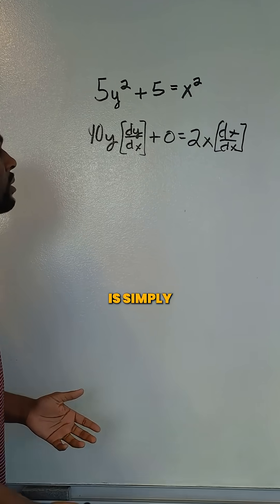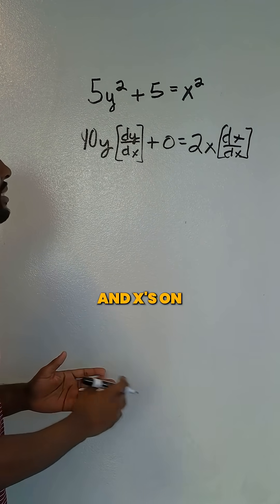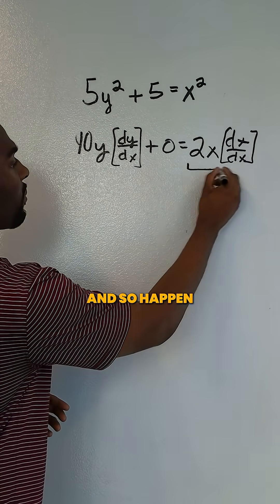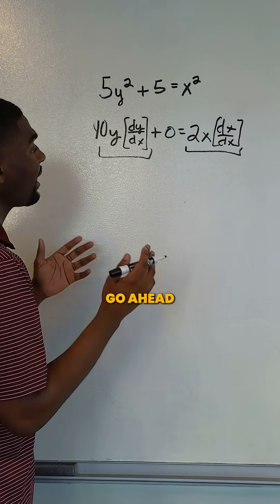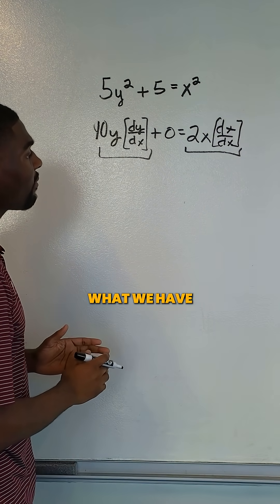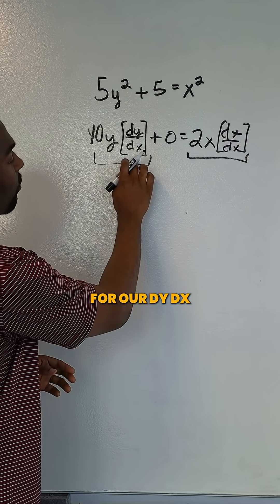The next step is simply for us to get all of our y's and x's on one side, and so it happened in this problem, they're already there. Now we're going to simply go ahead and simplify what we have and lastly isolate for our dy/dx.